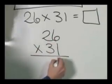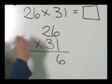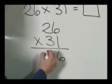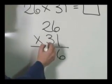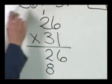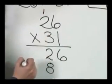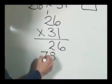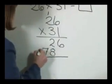One times six is six. One times two, although it's not a two, it's a twenty, is two, or twenty. Three times six is eighteen. Eight. And then we carry the one. Three times two is six, plus one is seven. And we do the addition.